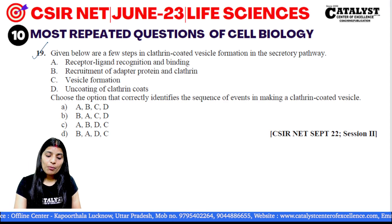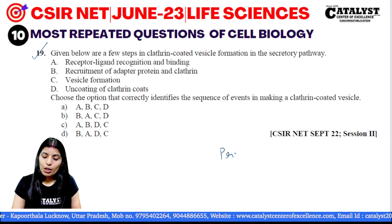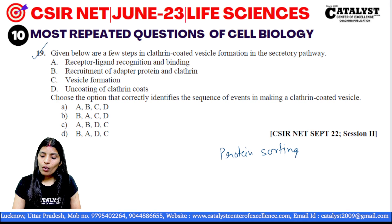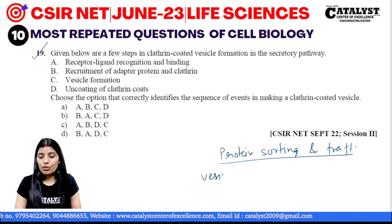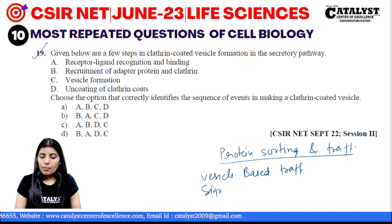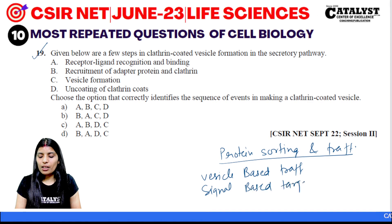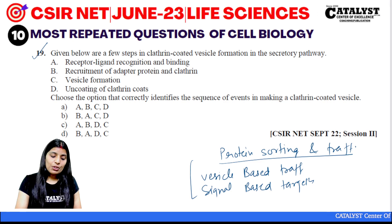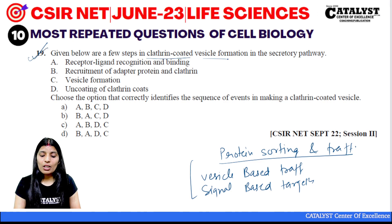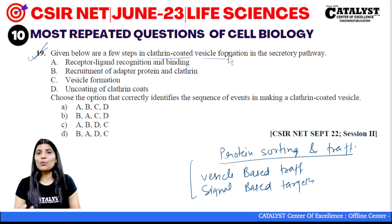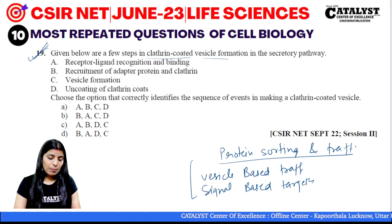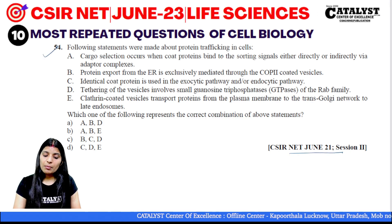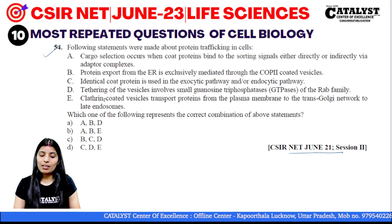The next most repeated topic is protein sorting and trafficking. Two main typologies appear: vesicle-based trafficking and signal-based targeting of proteins. For vesicle-based trafficking, questions feature clathrin-coated vesicles, COP1, and COP2. Anterograde and retrograde transportation questions are seen frequently — for example in September 2022 and June 2021.